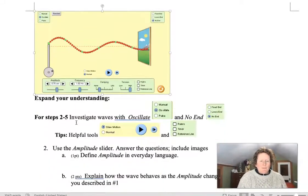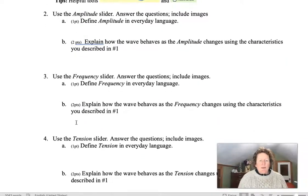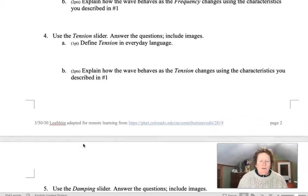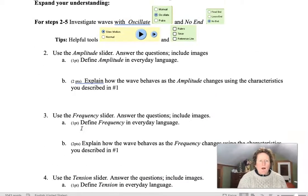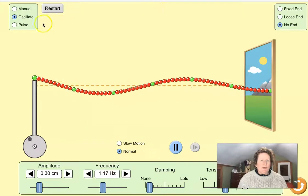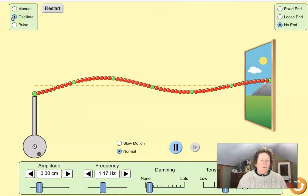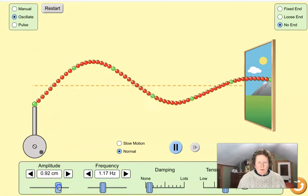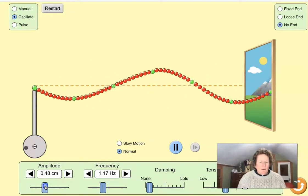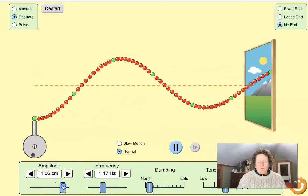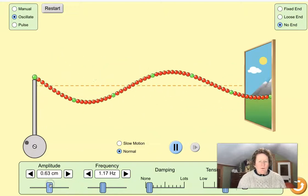The next part is explain amplitude in everyday language. Amplitude, frequency, tension, and damping. All of those can be accessed if you go into the oscillate mode here in the upper right left hand corner. Check oscillate. Amplitude is here so you can experiment with different amplitudes and see how that changes the wave and describe how that changes the wave in your own words.